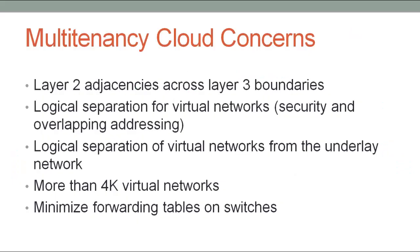To quickly summarize the highlighted issues: tenants require layer 2 adjacency across layer 3 boundaries; tenants require logical separation of traffic for security and to support overlapping addressing; there needs to be a logical separation of virtual networks from the physical underlay; support is needed for many more virtual networks than the 4,000 that traditional 802.1Q VLANs permit; and forwarding tables are getting large due to the high number of virtual machines.